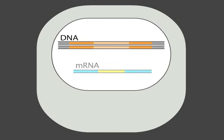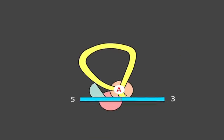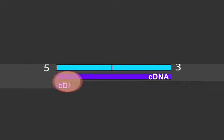Instead, we extract the cell's mRNA, which has already had the introns removed during transcription. Because we need a DNA version of our gene, we'll use the enzyme reverse transcriptase to make what is called complementary DNA, cDNA, from the RNA. And then we'll make it double-stranded using a DNA polymerase.